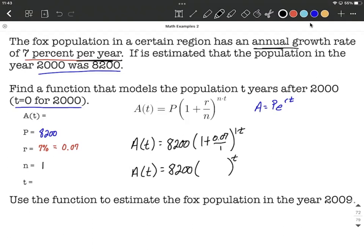0.07 divided by 1 is just 0.07, and 1 plus 0.07 is 1.07. So that's the cleanest function we can come up with to model this population growth.